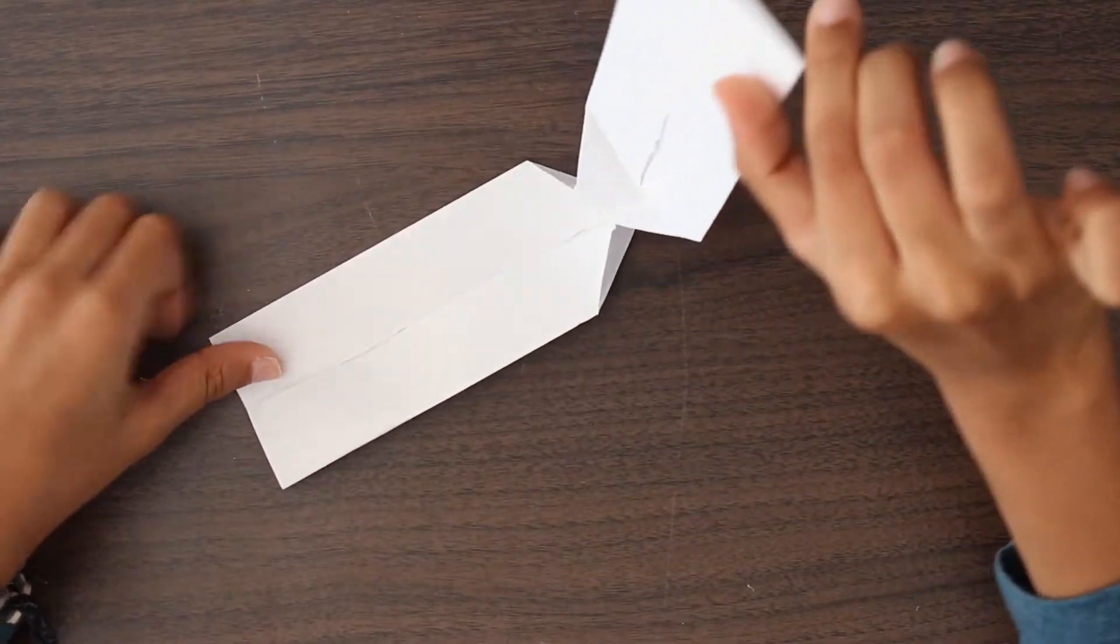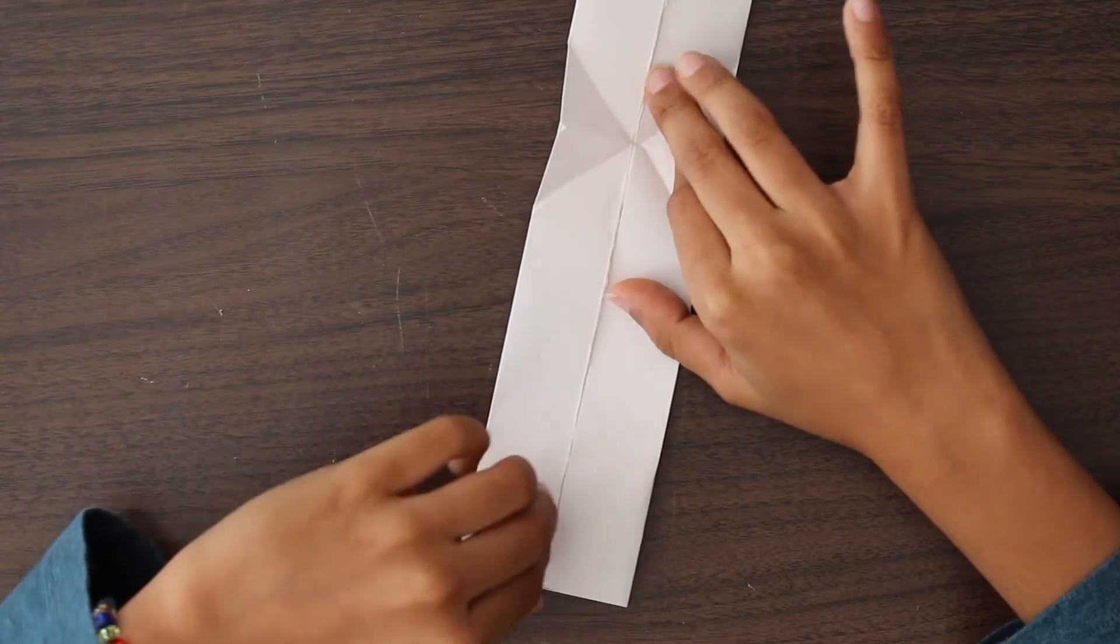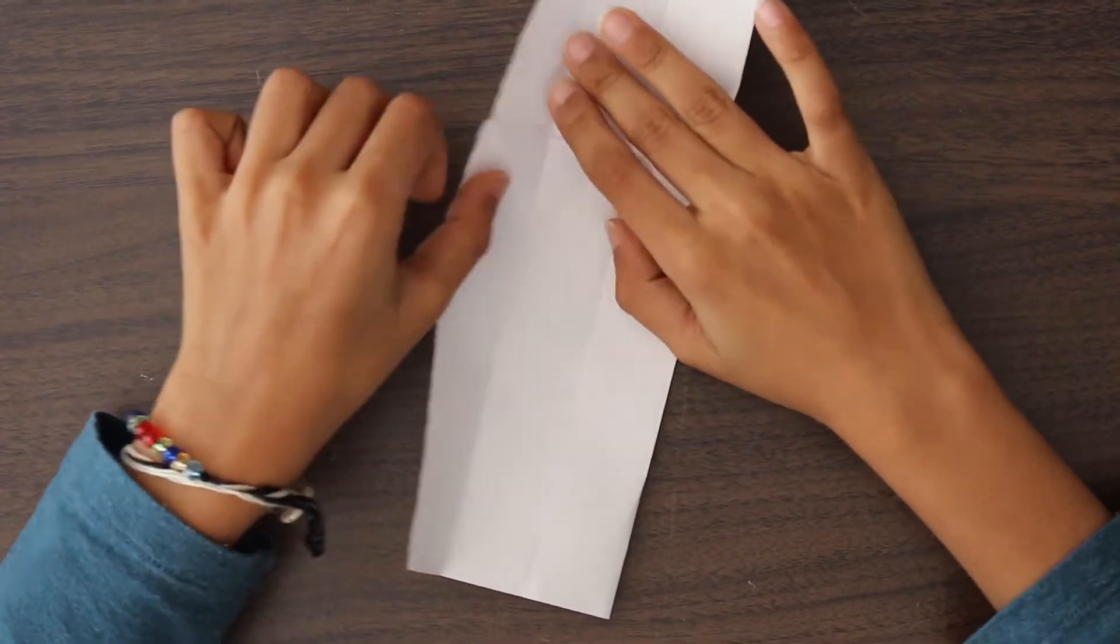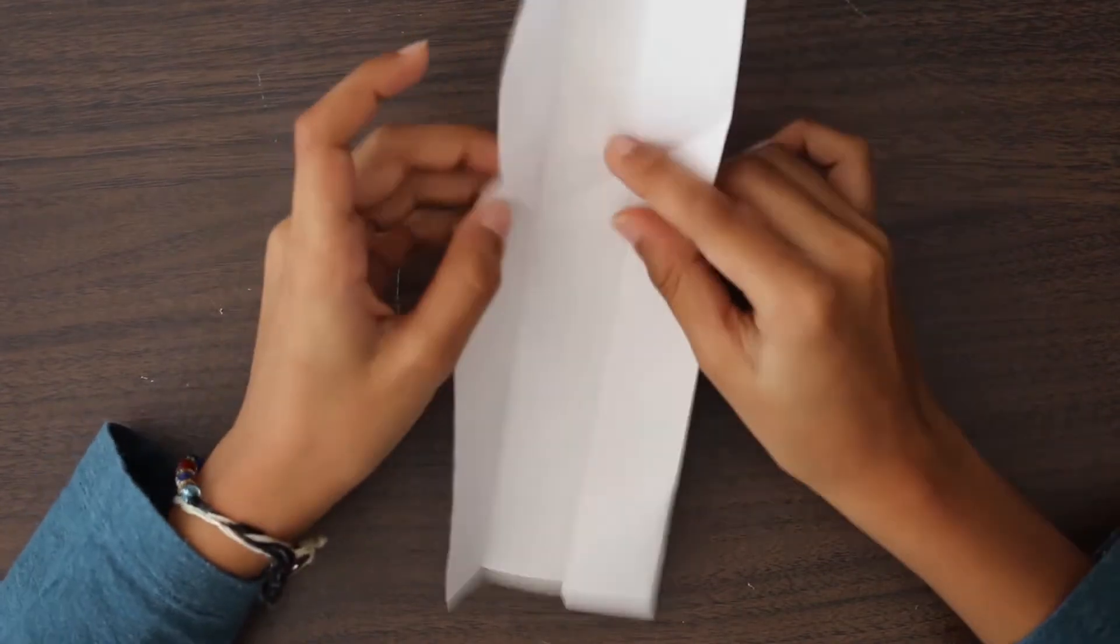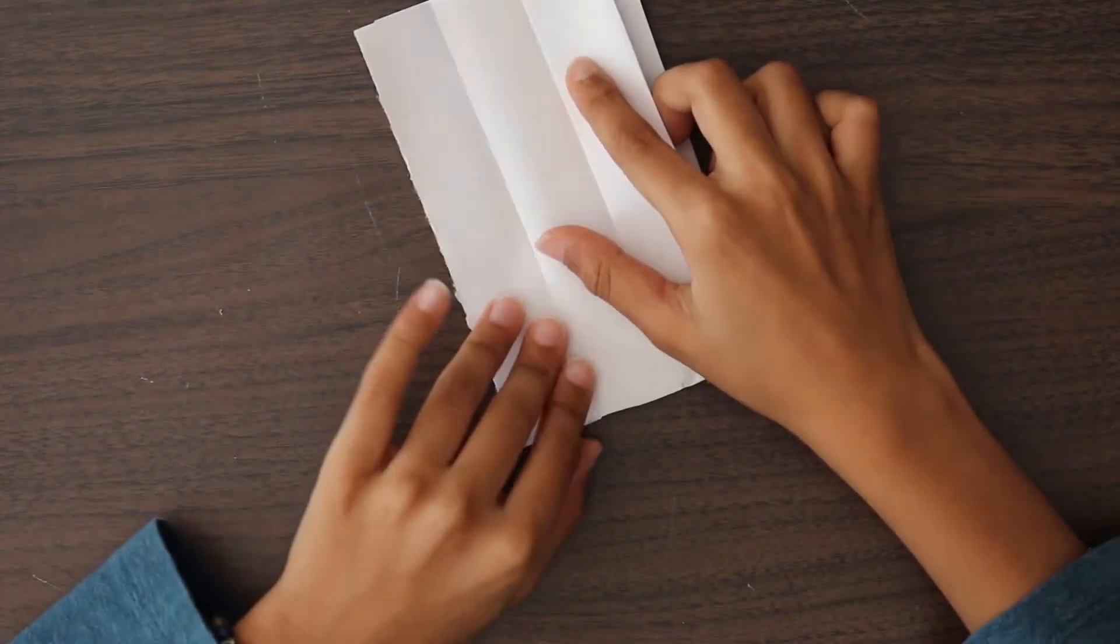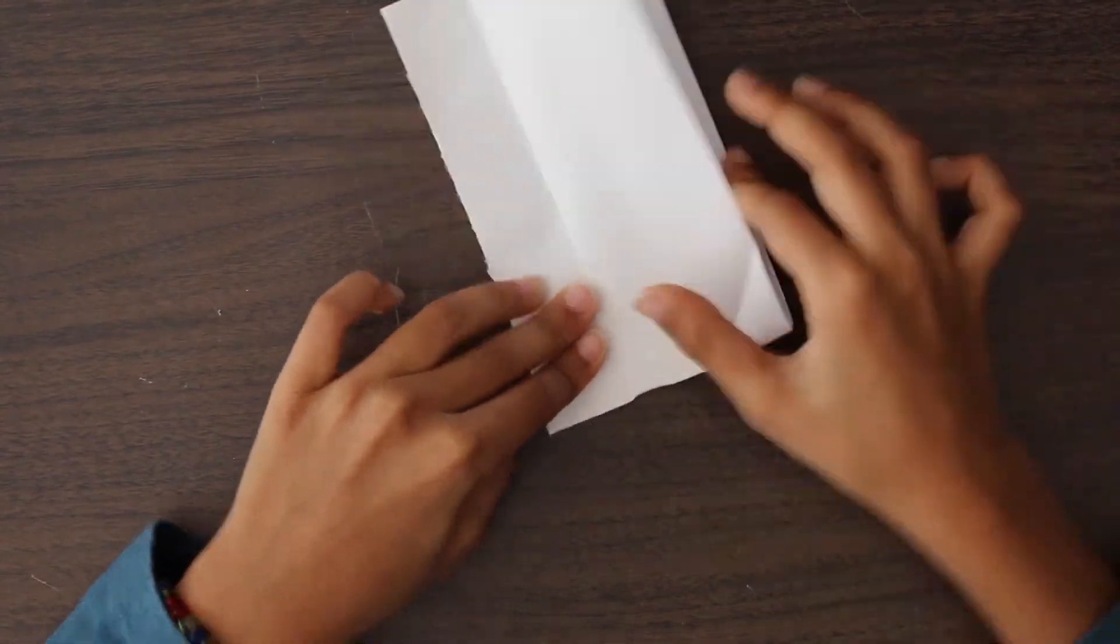Unfold this along with these two reverse folds. Now, open the right pocket. And fold it in half. Just crease it as well as possible.